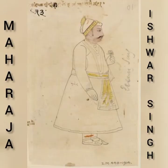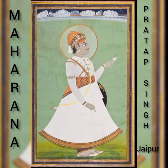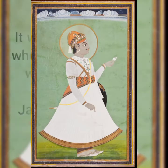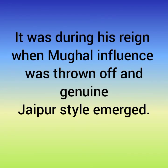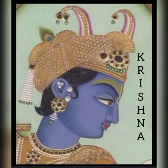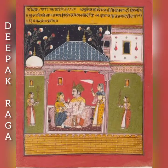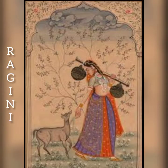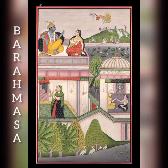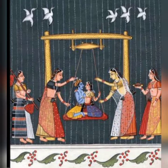Maharaja Eshwar Singh, successor of Jai Singh, was also a lover of art. Jaipur paintings reached their climax during the rule of Maharana Pratap Singh up to 1780. It was during his reign when Mughal influence was thrown off and the genuine Jaipur type emerged. During his reign, themes related to Krishna were painted. Over 50 artists worked under him. Raag and Ragini and scenes from different seasons, i.e. Barah Masa, were also beautifully painted.